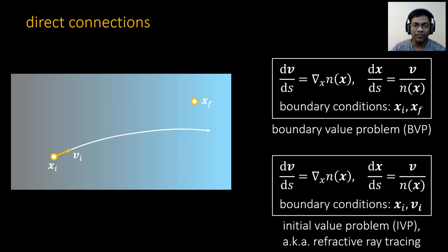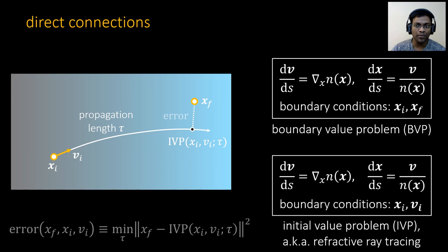We know how to solve IVP, so one way to solve BVP is to try different initial velocities and hope that we find a curve that passes through xF. Instead, let us consider a point on the IVP curve after we do refractive ray tracing for a propagation length tau. We define error as the shortest distance between xF and the IVP curve, which we can compute by minimizing over propagation length tau.